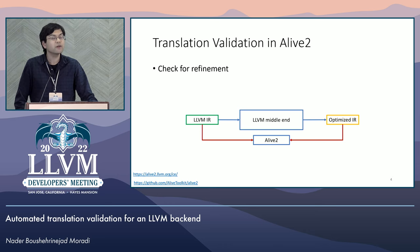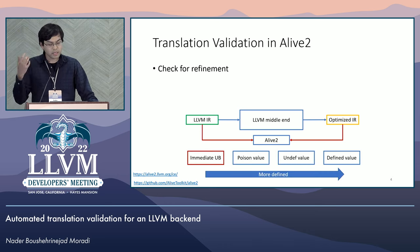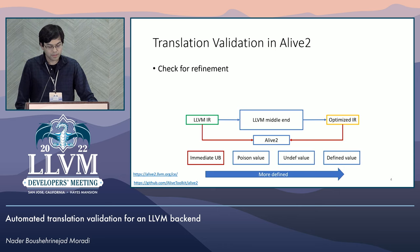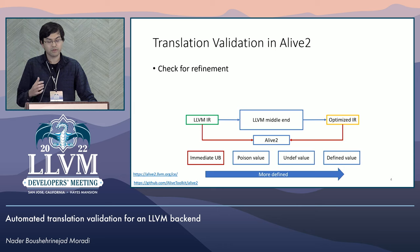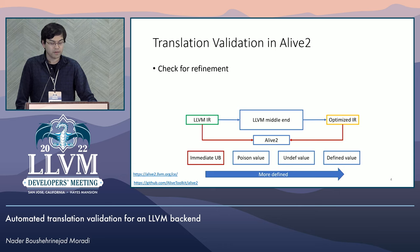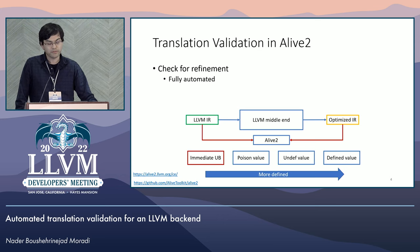You may ask, why refinement and not equivalence? Well, in LLVM, the result of an instruction could be undefined behavior, which adds non-determinism to the IR function. The result of a compiler transformation is allowed to remove non-determinism but not add to it, which means the output of a transformation may not be equivalent to its source, making refinement checking a more suitable test oracle than equivalence. Other sources of non-determinism are poison values and undef values, which sit between concrete values and immediate undefined behavior.